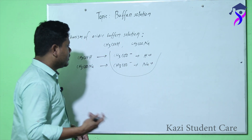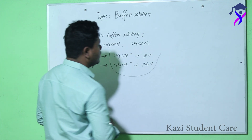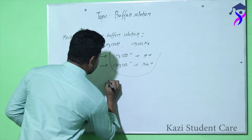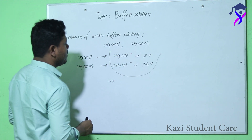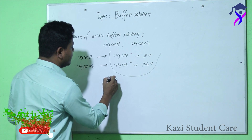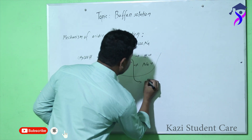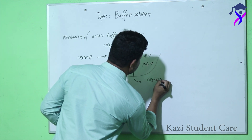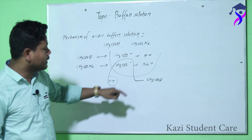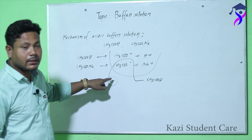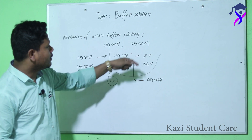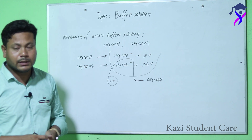This mixture is known as acidic buffer solution. Now if we add a small amount of acid — acid means H⁺ ions — then the H⁺ ions of the acid react with the acetate ions (CH3COO⁻) of the buffer solution and form acetic acid. That is why the concentration of H⁺ ions remains the same and the pH value also remains the same.